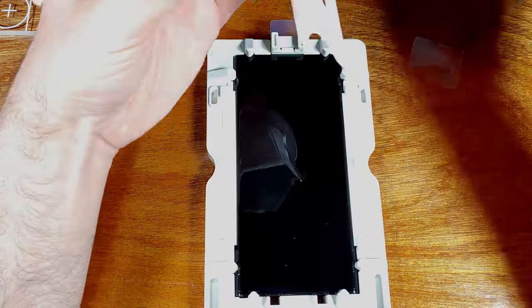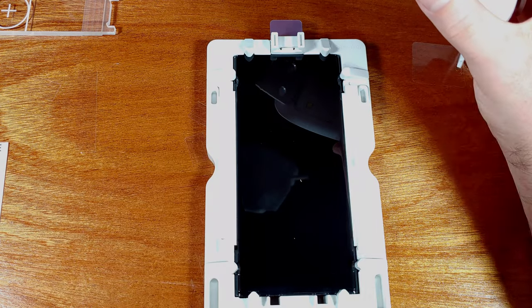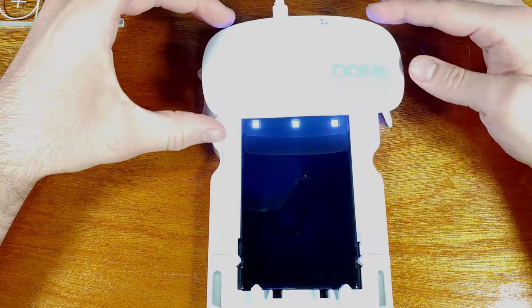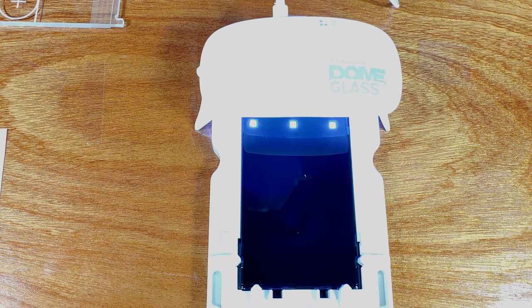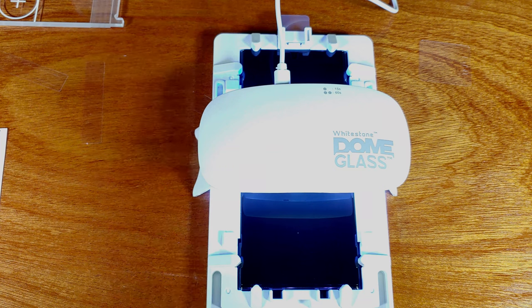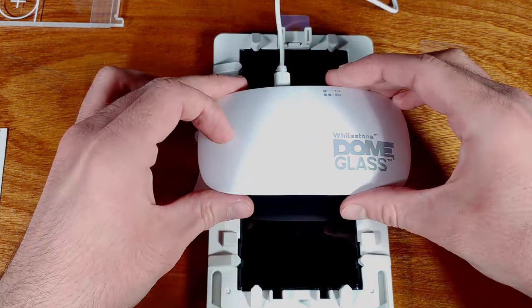You're going to want to let this process continue for about a minute or two. I think on mine, I waited about three minutes actually, just to make sure all the air was pushed out by the adhesive. Once this is done, you can double check real quick while leaving the phone inside the jig that the adhesive got everywhere.